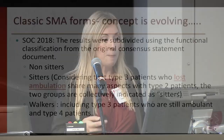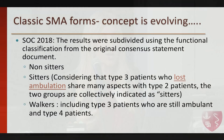We've already started to hear that type 1 patients can now walk, and type 2 patients will likely start running soon. These classifications are evolving, which is why the latest standards of care consensus introduced a more functional classification: non-sitters, sitters — including type 3 patients who've lost ambulation sharing many aspects with type 2 patients — and walkers, including type 3 patients who remain ambulant and type 4 patients, as well as those type 1 and 2 patients now walking.